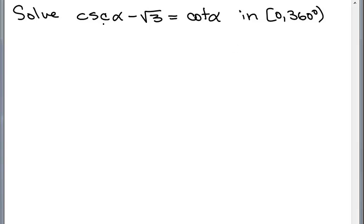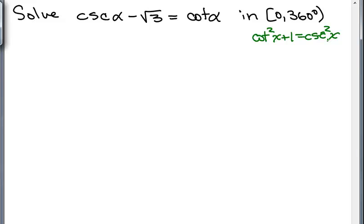When I see cosecant of alpha and cotangent of alpha, I know there's this relationship: cotangent squared x plus 1 equals cosecant squared x. So if I had a cosecant squared alpha, I would be able to replace it with cotangent squared x plus 1.